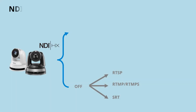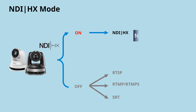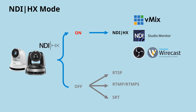In NDI mode, the camera outputs NDI-HX for high-quality video networking and low-latency IP production. The camera is instantly recognized on your network as a video source, ready for live production.